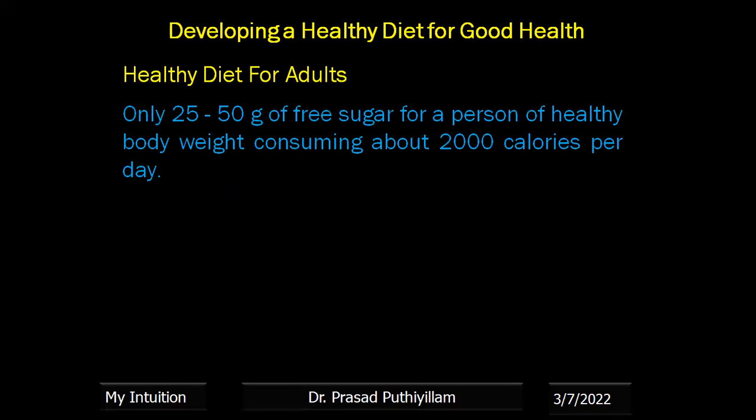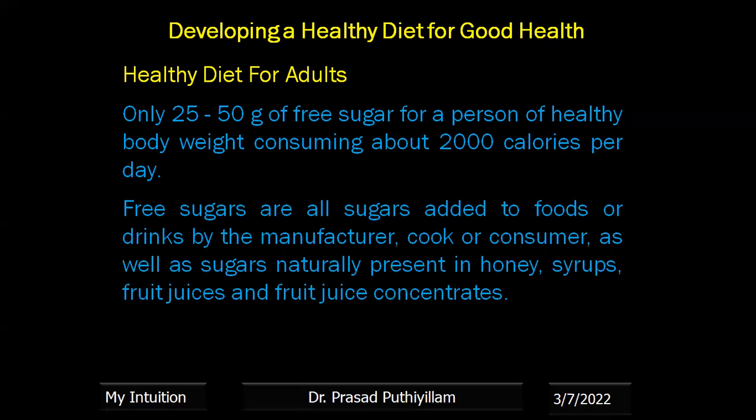Only 25 to 50 grams of free sugar for a person of healthy body weight should consume 2000 calories per day. Free sugars are all sugars added to food or drink by the manufacturer, or during cooking, or by the consumer, as well as sugars naturally present in honey, syrups, fruit juice and fruit concentrates.